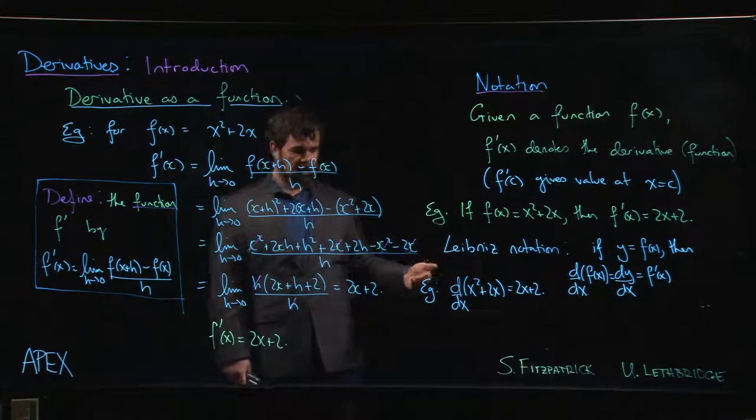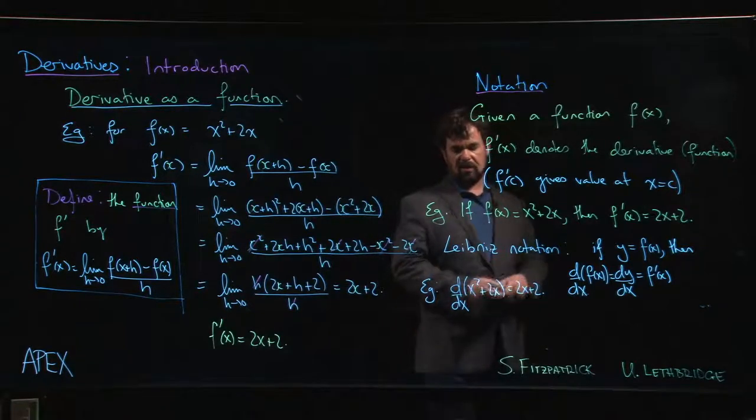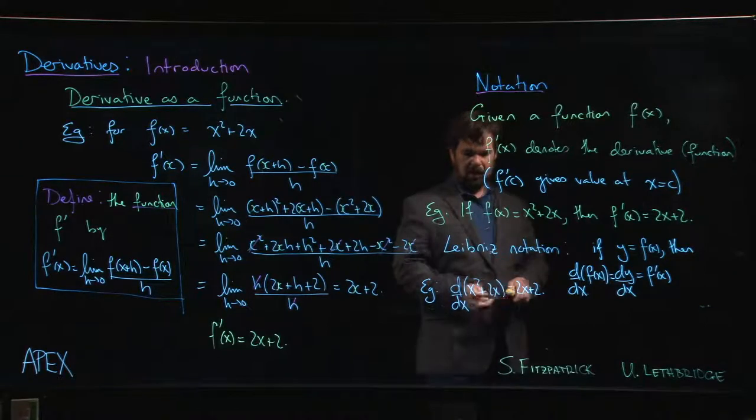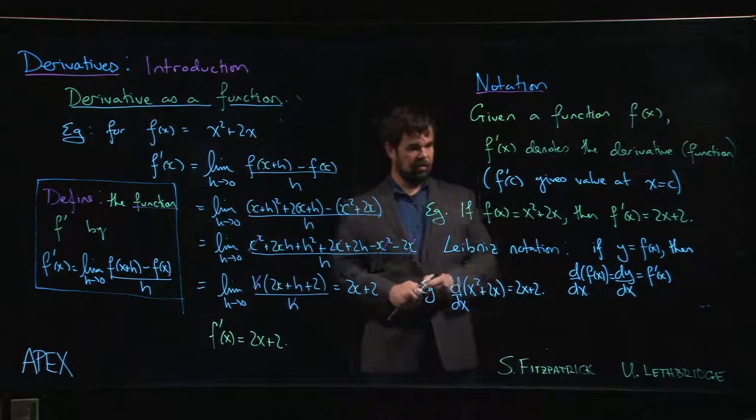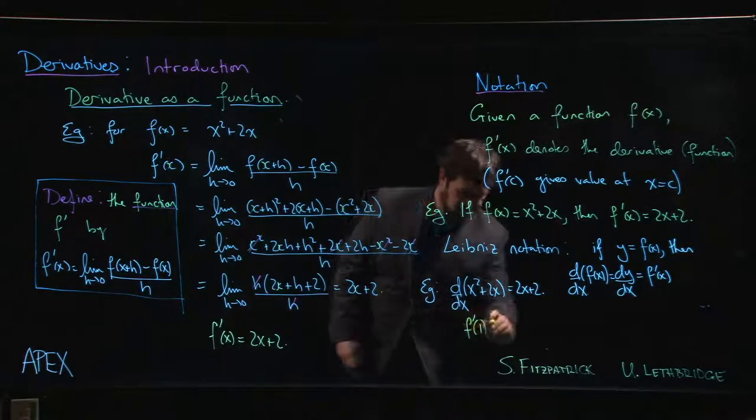The downside to using this notation is it's very clumsy if you want to talk about the value of a derivative at a point. You'll often see things like, for saying something like f prime at 1, you'll see things like...